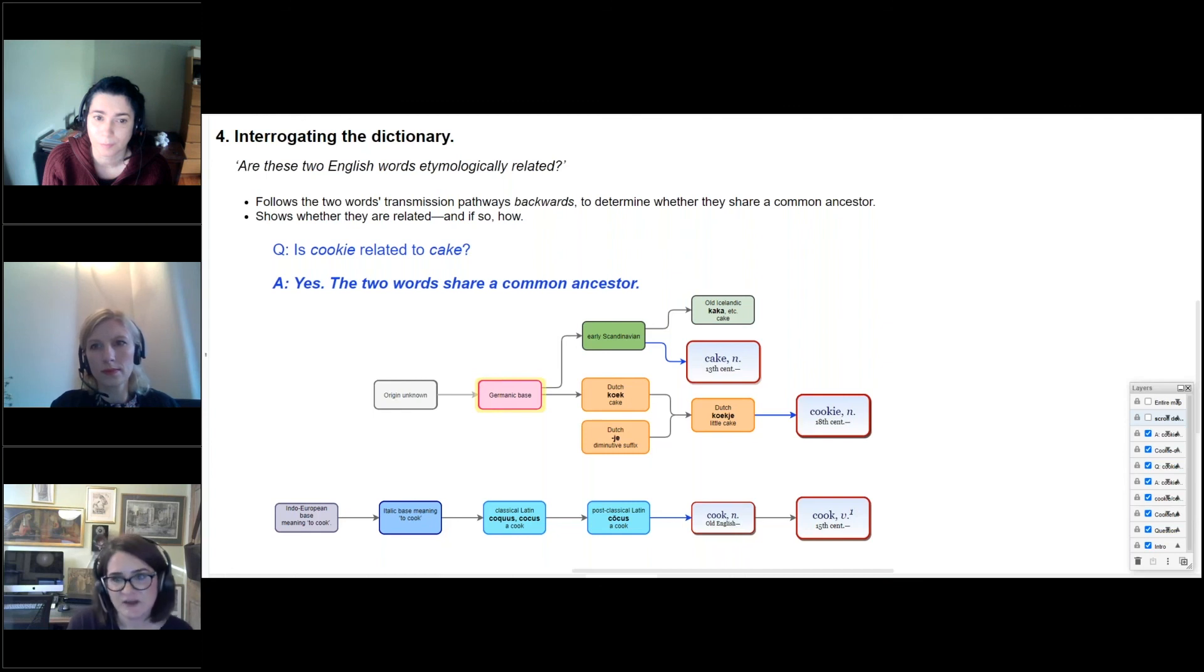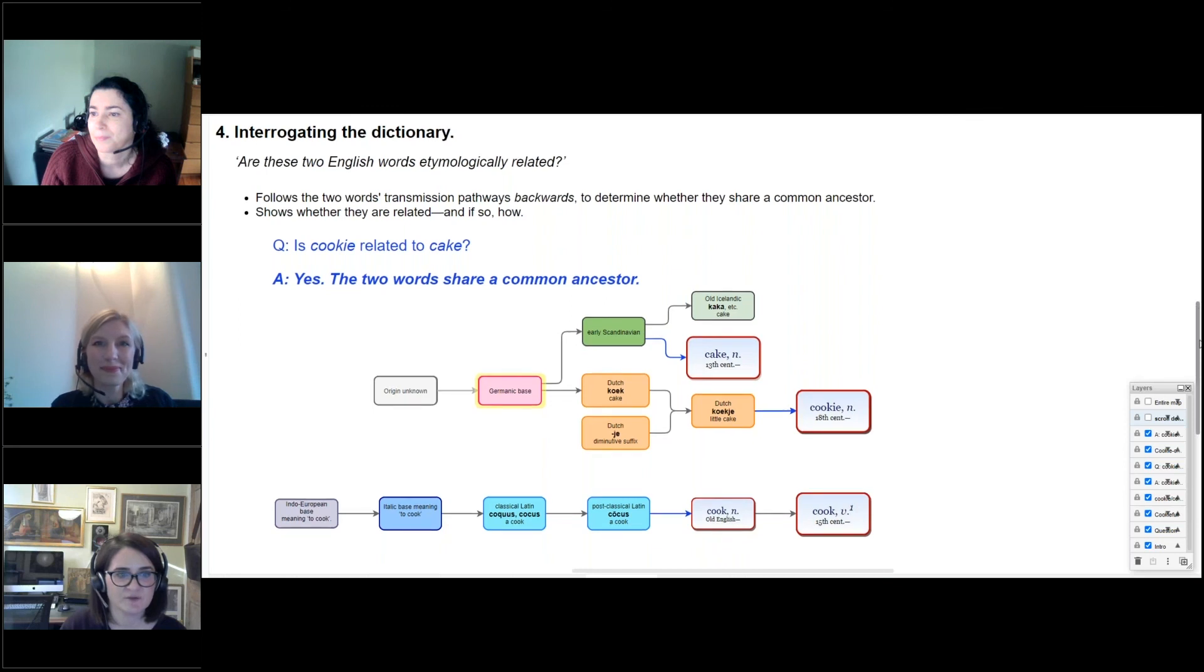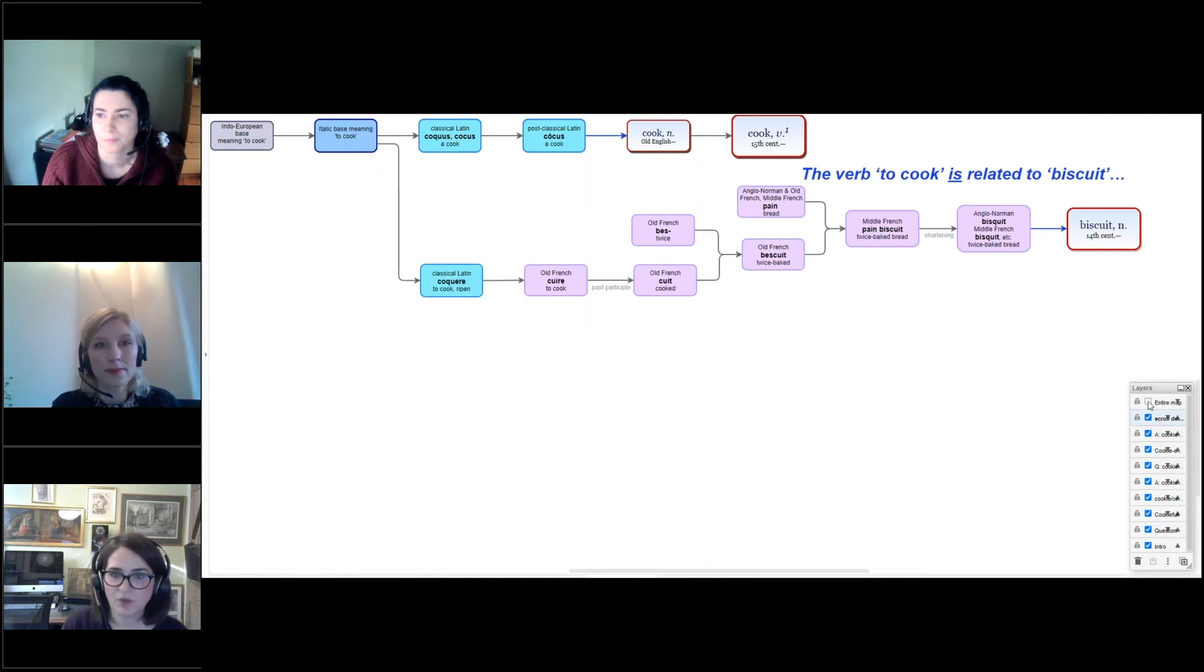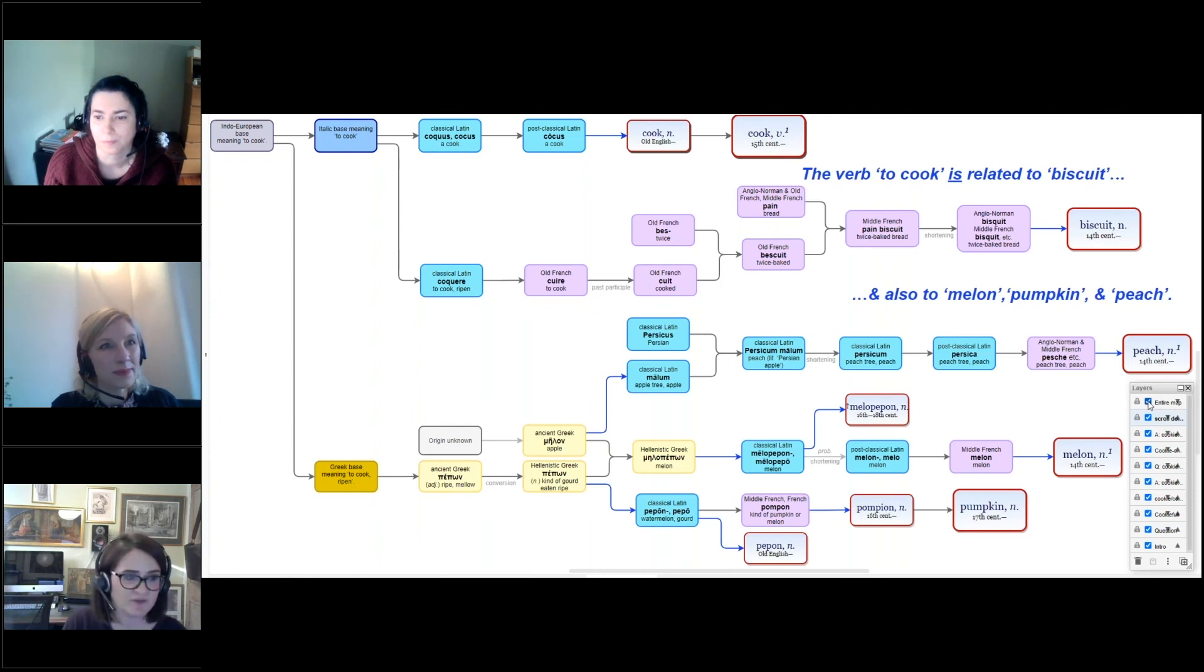Using visualization functionality to interrogate the dictionary like this actually becomes quite addictive and can reveal some quite unexpected connections. And for this one, you have to bear with me as I scroll my visual smoothly down. For instance, you can find out that cook might not be related to cookie, but it is related to biscuit. And then all the healthy fruit and vegetable words that we looked at earlier are related to biscuit too. So melon, pumpkin and peach and friends all ultimately go back to the same Indo-European base here meaning to cook. Incidentally, I'm not sure whether that means that a chocolate biscuit counts as one of your five a day, but I would like to think it did. And again, as well as revealing etymological connections, a map built this way could provide a way for you to access the OED, navigating between the entries marked on your tree by using their boxes as clickable links to open and explore all that they have to offer.